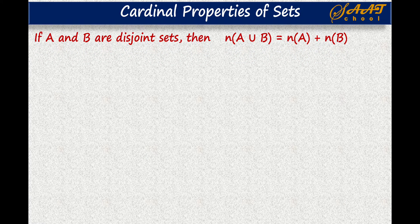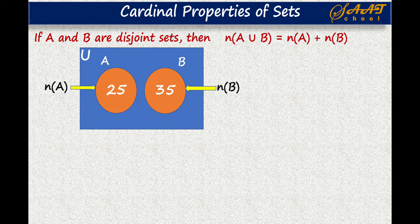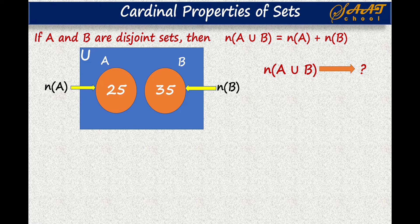We now have the cardinal properties of sets. In the case where two sets are disjoint, the cardinal number of A union B is the sum of the cardinal number of A and the cardinal number of B. For example, if N(A) = 25 and N(B) = 35, then N(A) = 25 represents the number of elements in set A, and N(B) = 35 represents the number of elements in set B. To find the cardinal number of A union B, we find the sum of N(A) and N(B). In this case, N(A ∪ B) = 25 + 35 = 60.